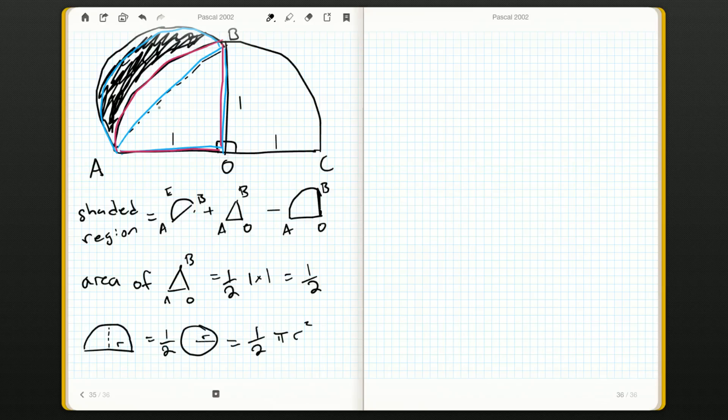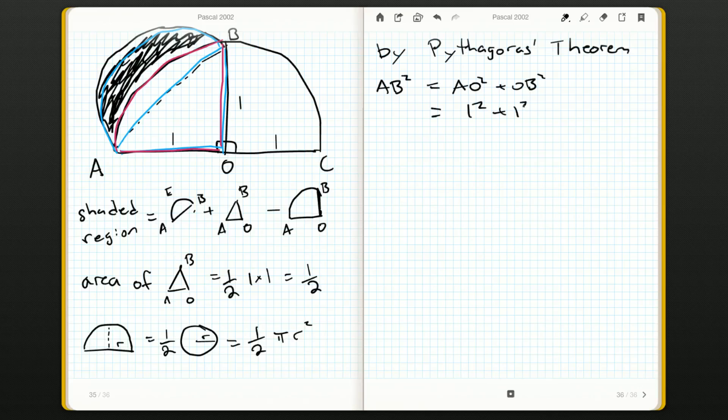But the diameter of the semicircle, which is twice the radius, happens to be the hypotenuse of my right angle triangle. So by Pythagoras's theorem, AB squared equals AO squared plus OB squared. Both of these are radii: one squared plus one squared, that's one plus one, that's two.